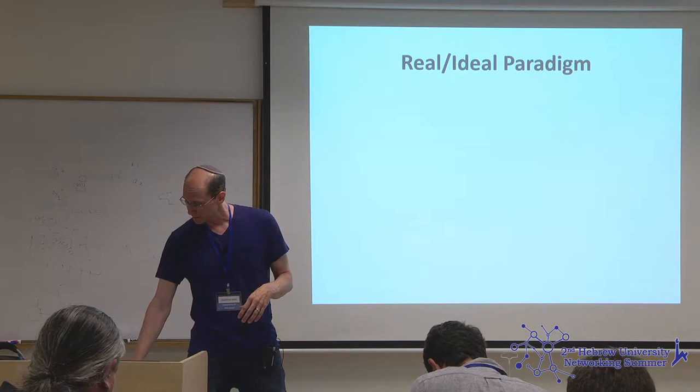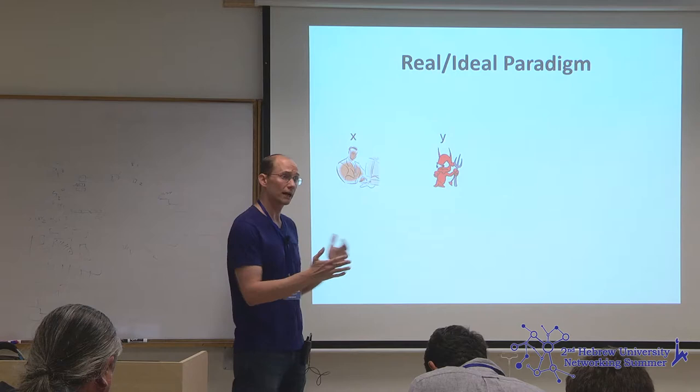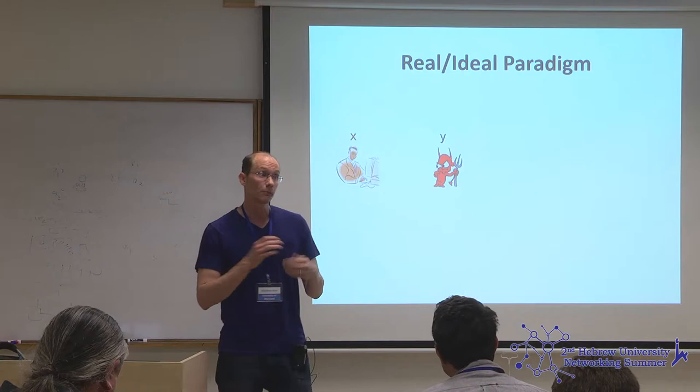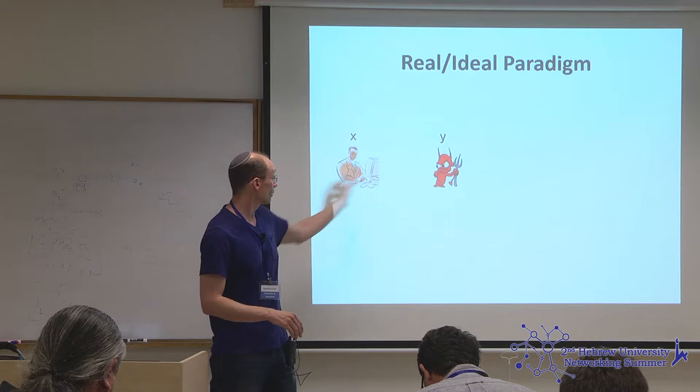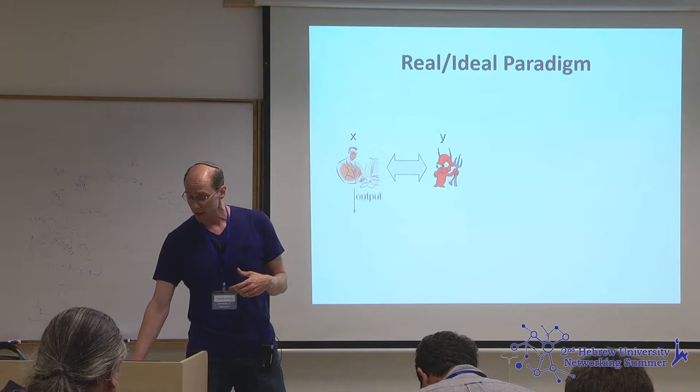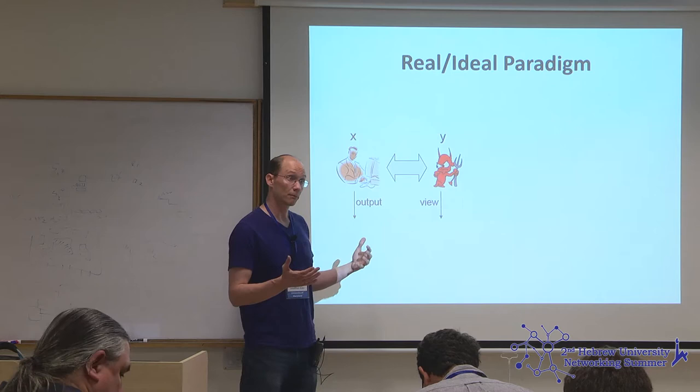More formally, this is the real-ideal paradigm, where we evaluate the security of a real-world protocol by comparing it to what we would achieve in an ideal world in the presence of a trusted third party. Here I've simplified it to secure two-party computation: two entities each with their own private input want to compute some function over that input. They execute some protocol, resulting in an output — the function f computed over the joint inputs x and y.